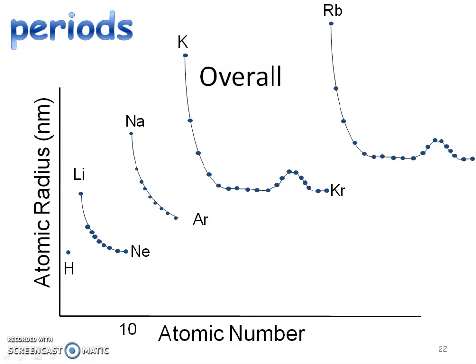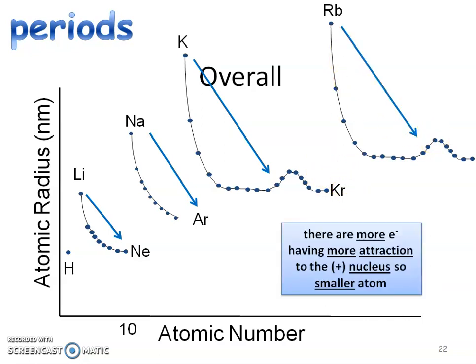So now let's look at the periods. Again, we have lithium to neon is in one period, sodium to argon, potassium to krypton, and rubidium on. So what's happening here? Well, there are more electrons having more attraction to the positive nucleus. So that's going to bring in those electrons, which means it's going to make that atom smaller.